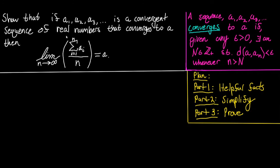Let's first leverage what we're given to be true, and use that to motivate our helpful facts. One of the first things we're given is that the sequence a₁, a₂, a₃, and so on is convergent. Let's rephrase that using the definition of convergence in a more useful way.